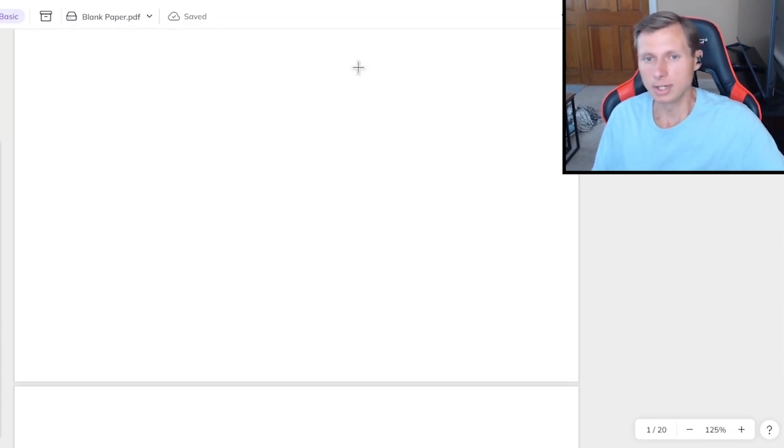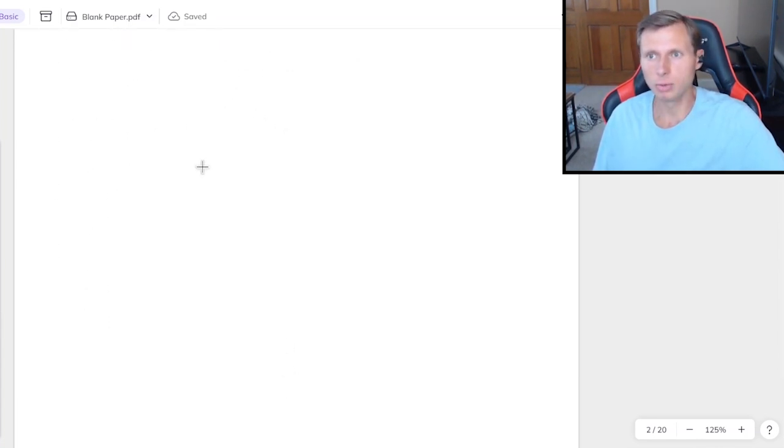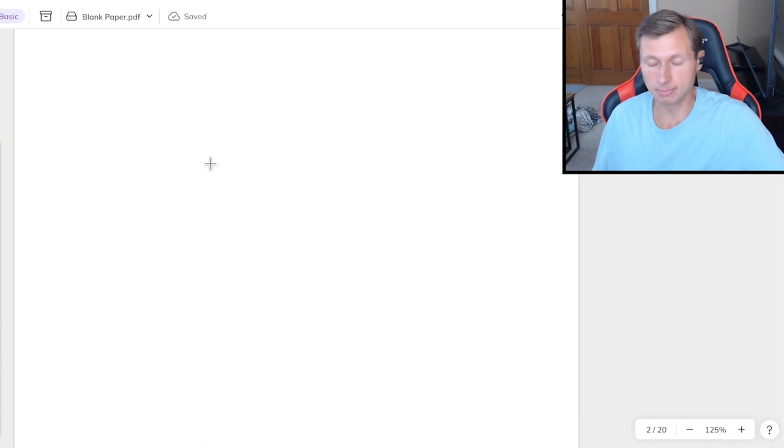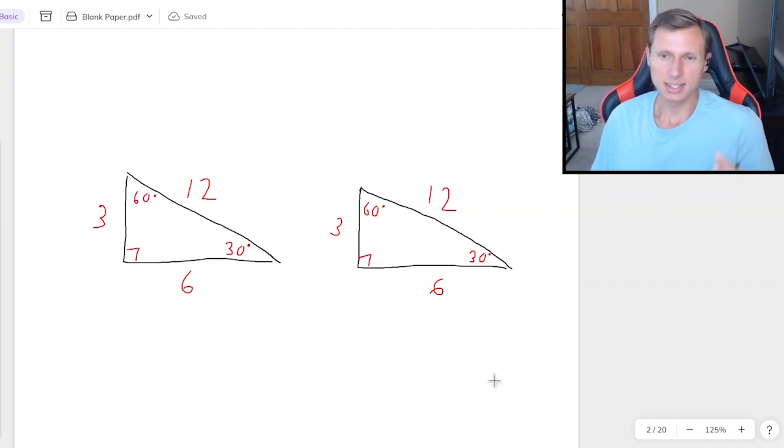So first I want to talk about congruent triangles and what it means for a triangle to be congruent. When two triangles are congruent, it means that they have all of the same side lengths and angles. So let me just make up some random numbers here. So as we can see, all the side lengths are equal, and I'm also saying that the angles need to be equal to each other as well. And so, since all of my angles and my sides are equal to each other, these two triangles are congruent.